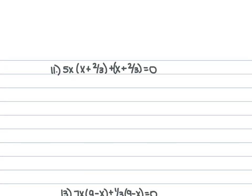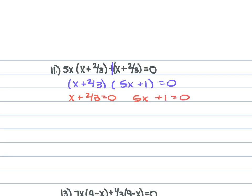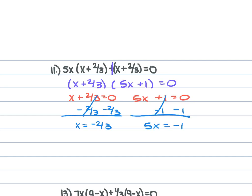For problem 11, we have 5x(x + 2/3) + (x + 2/3) = 0. The lone (x + 2/3) is like 1·(x + 2/3), so this factors as (x + 2/3)(5x + 1) = 0. Setting each equal to 0: subtract 2/3 from each side gives x = −2/3. For 5x + 1 = 0, subtract 1 and divide by 5: x = −1/5.